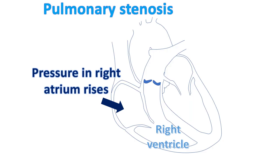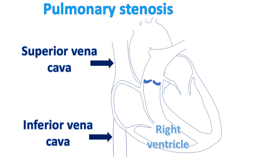Decrease in right ventricular compliance increases right atrial pressure, which will be more pronounced when the right ventricle ultimately fails. Forceful right atrial contraction produces a prominent A wave in the jugular venous pulse. The right atrium enlarges due to the overload, and increased right atrial pressure is transmitted to the superior and inferior vena cava as well.